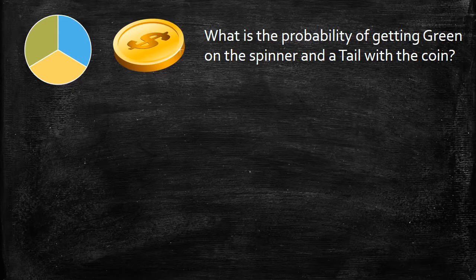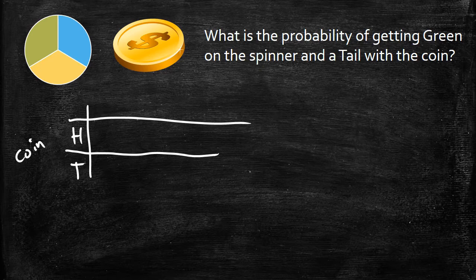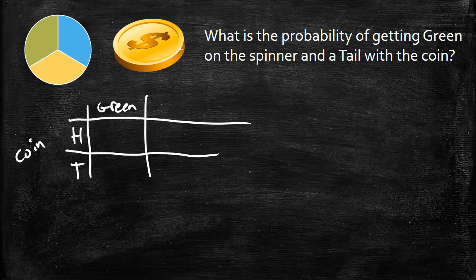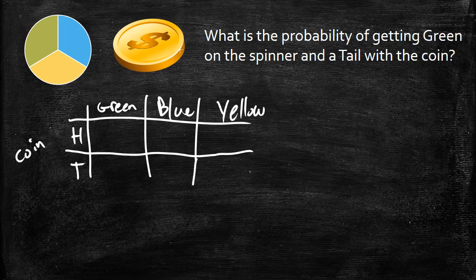So we know how to do this using a probability table, so that's what I'm going to set up first. I'm going to set up my coins over here, and I know that I can get a heads or a tails. Now I'm going to set up my spinner. I know that I can get a green, a blue, or a yellow, and I'll just straighten out my table here a little bit.